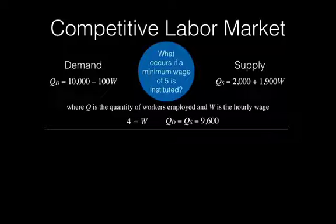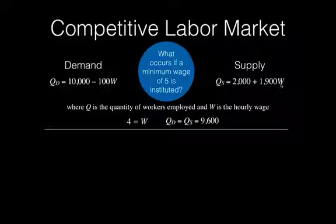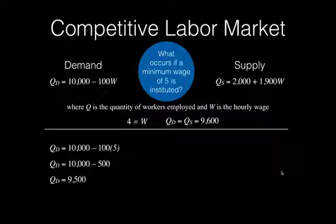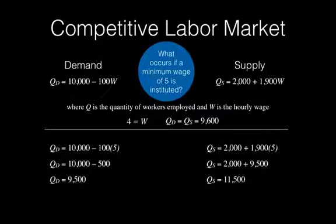Now we want to take a look at what occurs if a minimum wage is instituted and it's equal to 5. We're going to insert 5 into both the demand and supply equations. QD equals 10,000 minus 100 times 5, which is 10,000 minus 500, so the new quantity demanded is 9,500. For quantity supplied: 2,000 plus 1,900 times 5, which is 2,000 plus 9,500, and QS equals 11,500.